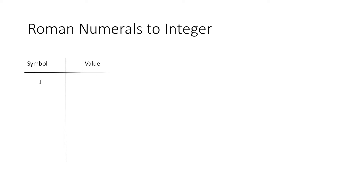Firstly, the symbol I has the value 1, the symbol V has the value 5, the symbol X has the value 10, and the symbol L has the value 50. Next, the symbol C has the value 100, the symbol D has the value 500, and finally the symbol M has the value 1000.